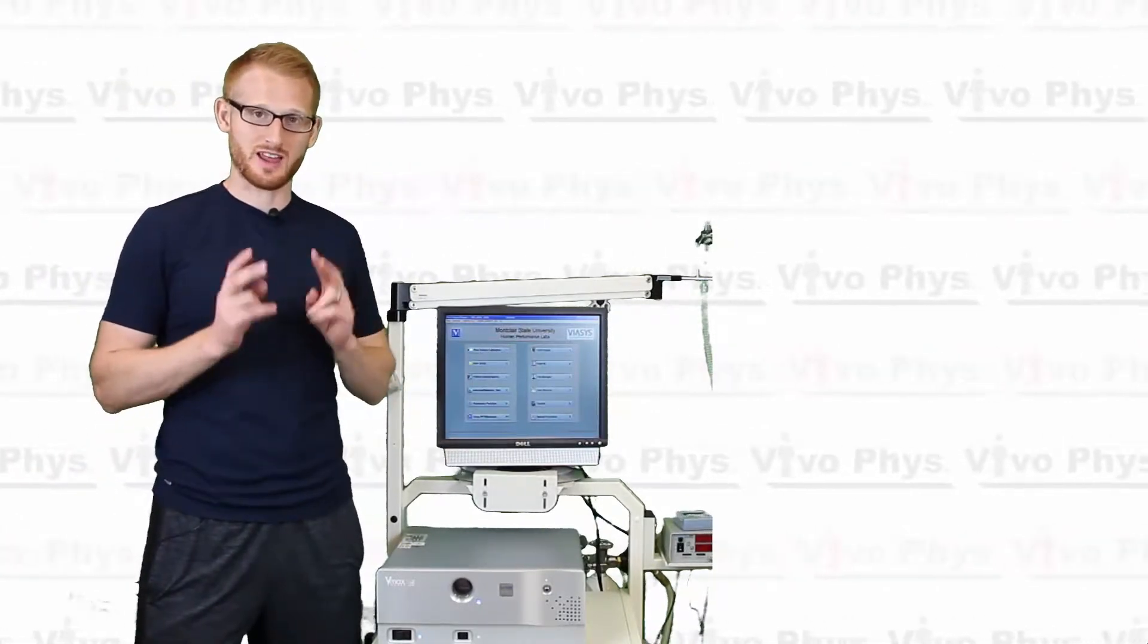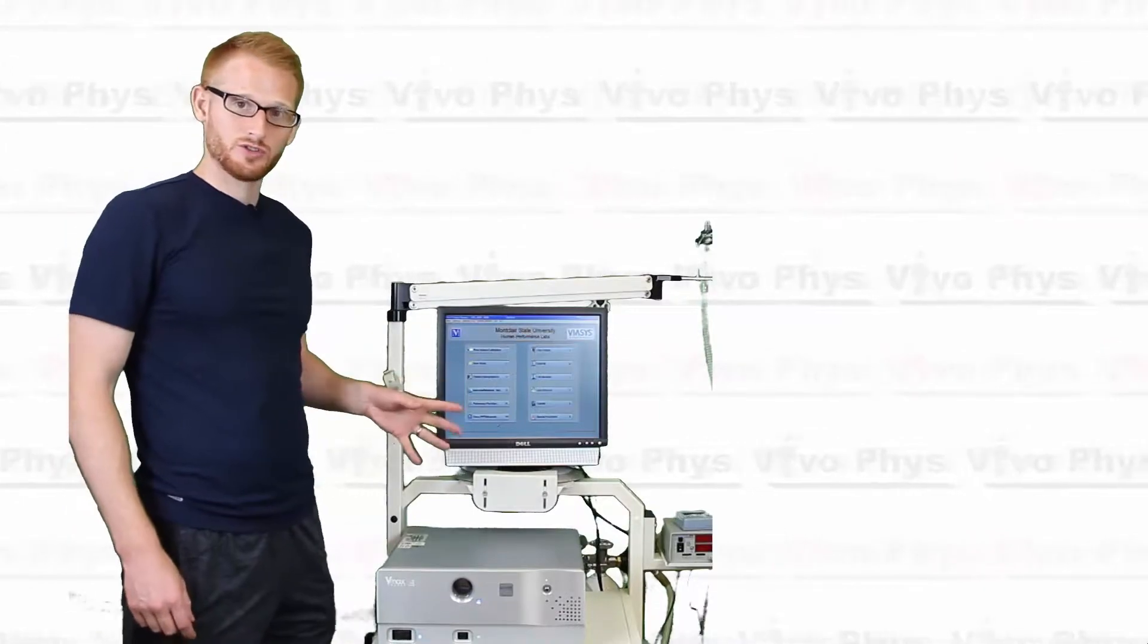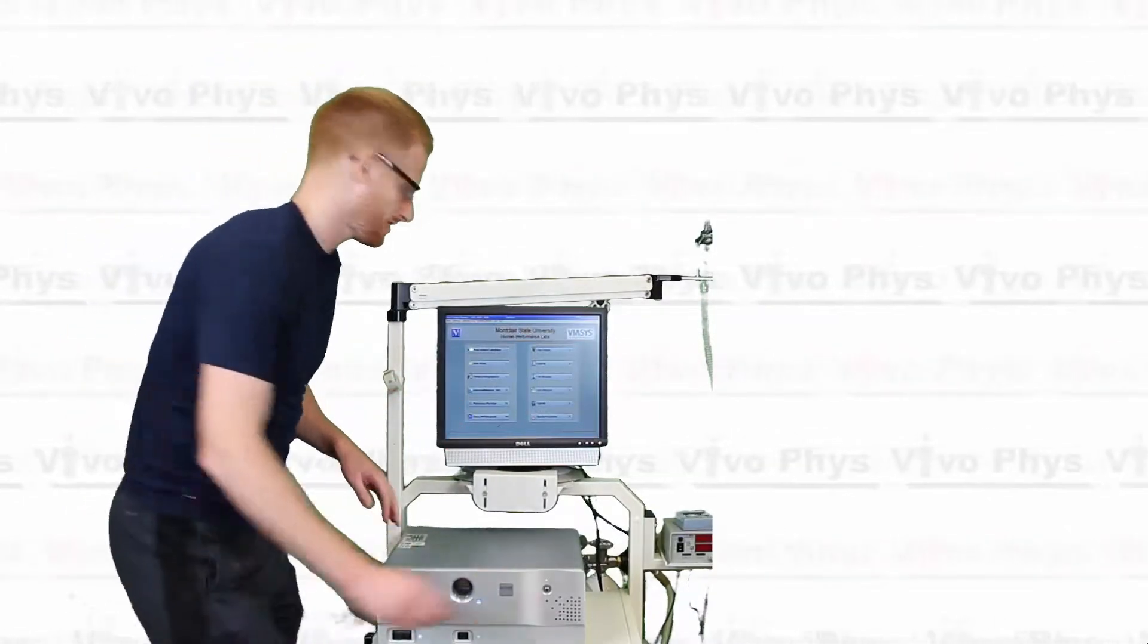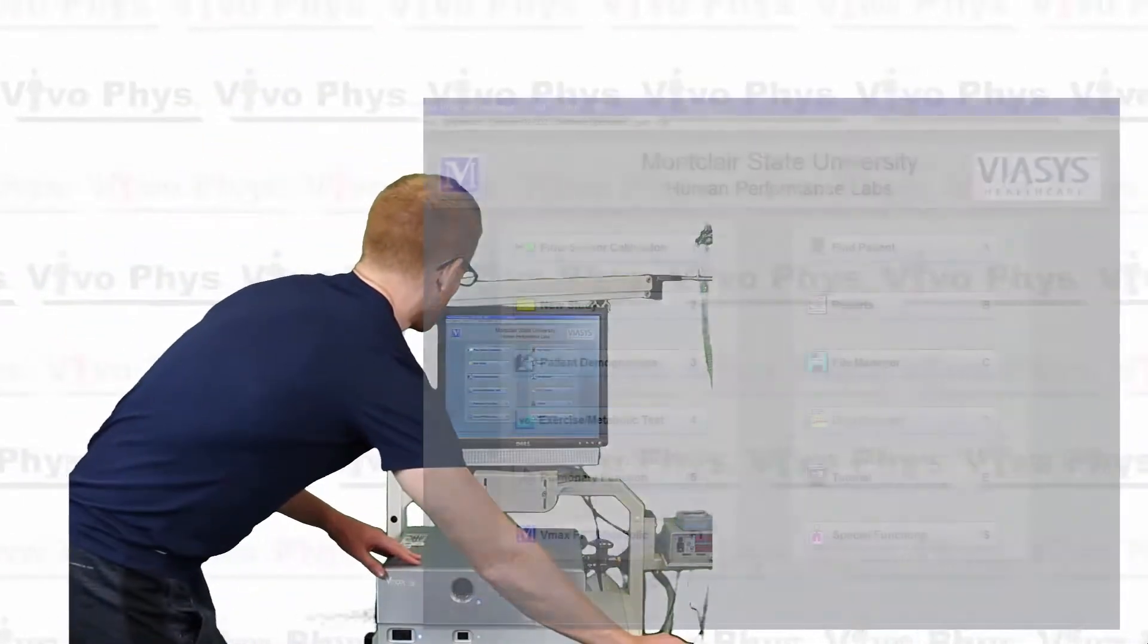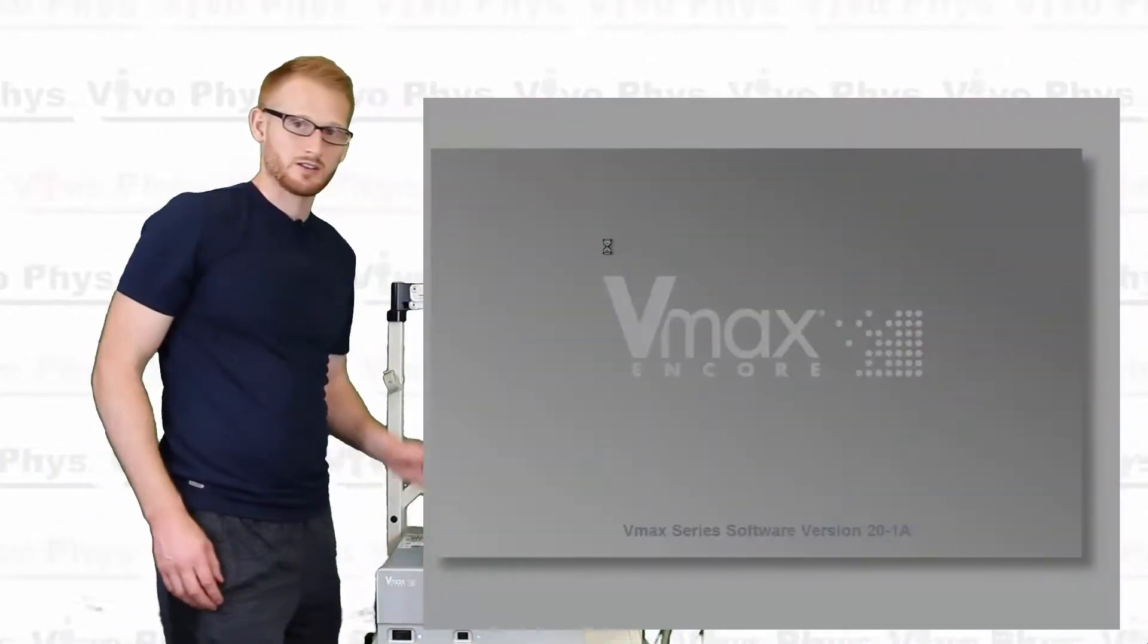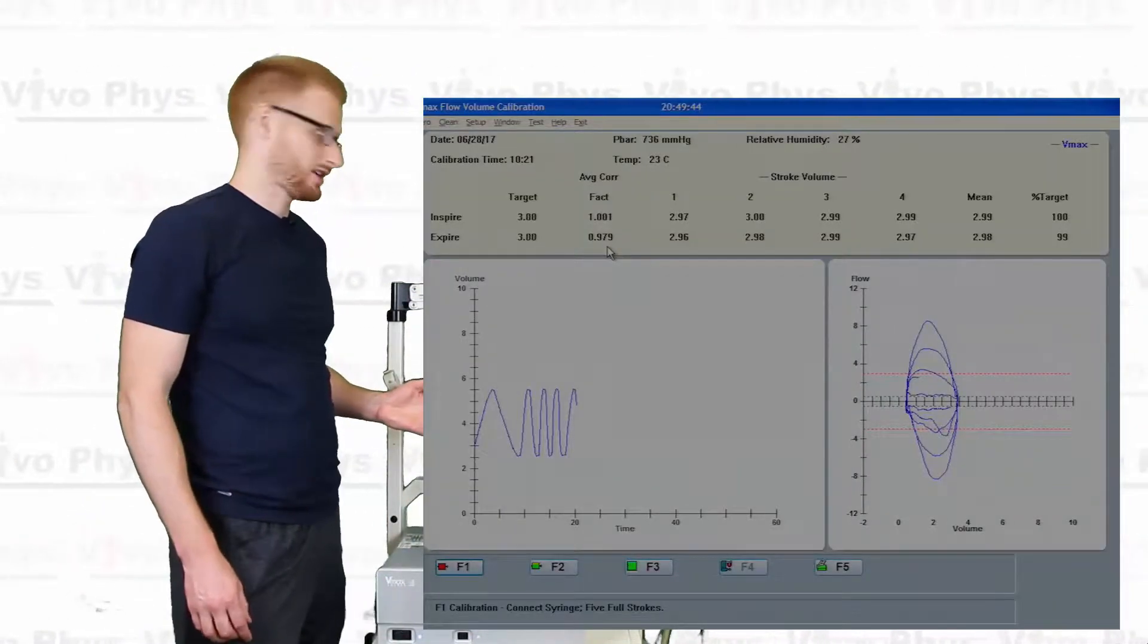So the flow should be what you do first, not the gas calibration. Alright, so there's two parts to this, gas and flow. Alright, so in order to do the flow calibration, we're going to come in here. We're going to click on flow sensor calibration, and you're going to see a new dialog come up here.